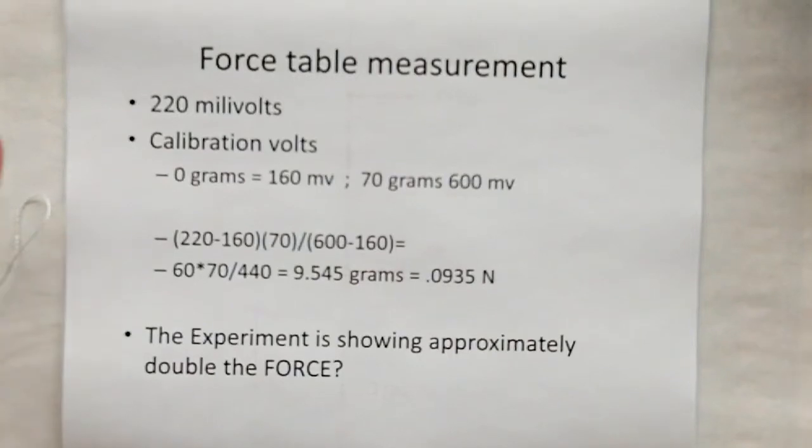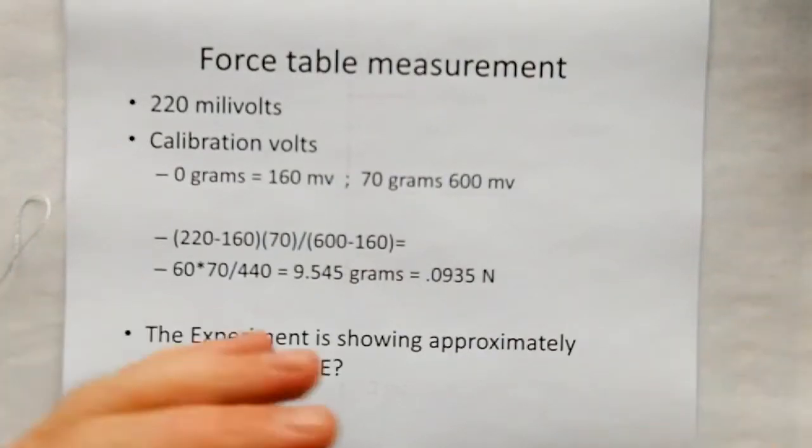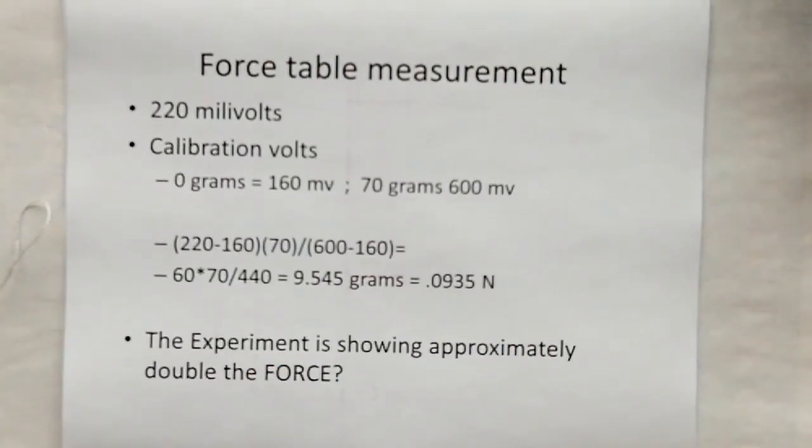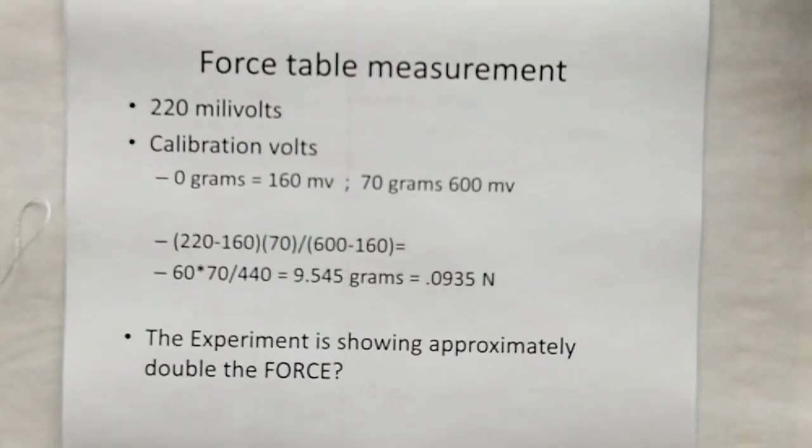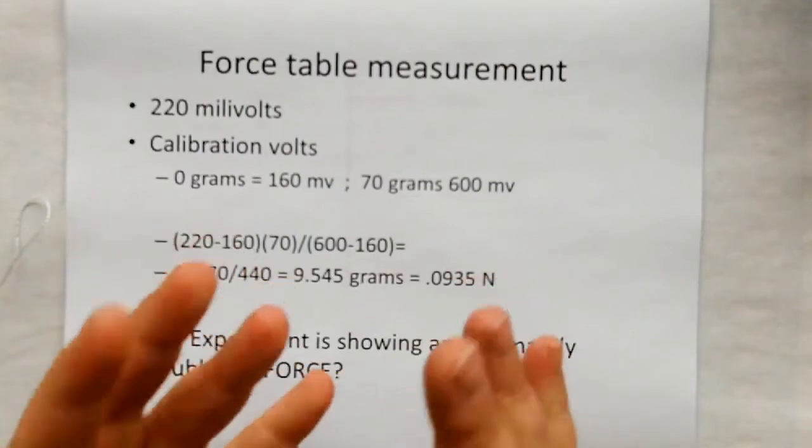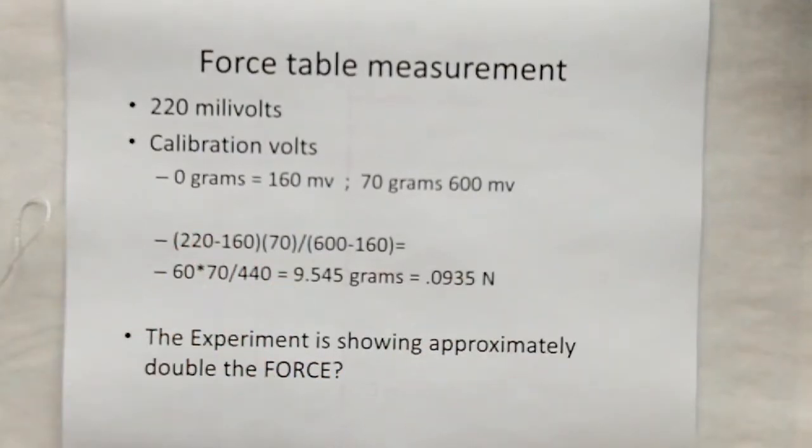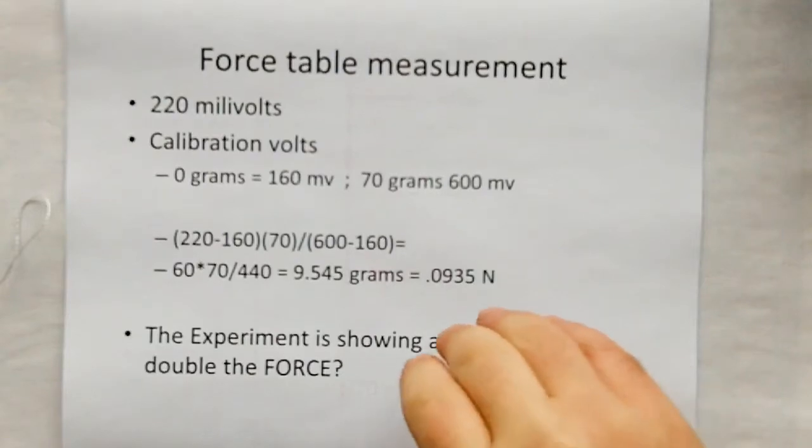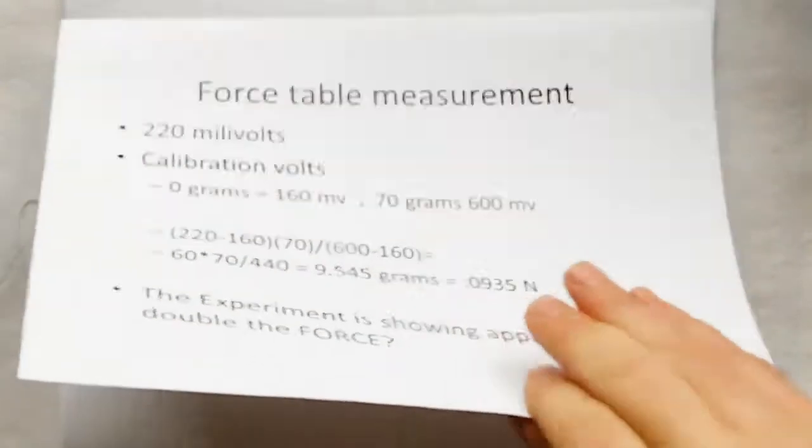So essentially we're getting about double the force. There could be a lot of reasons for this. Usually, though, when you get a factor of two, it's usually human error. Something that neatly round of error is usually human error. I don't think that there's more secrets to magnetism, especially not for an experiment like this. So we've got to go find out what the problem is.